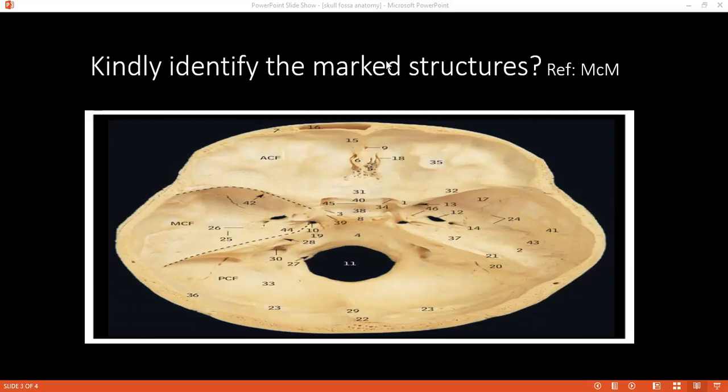Can you name two conditions which can give lytic skull lesions? Yes, ma'am. This can be secondary metastasis from the renal carcinomas or the thyroid carcinomas. It can be hemangiomas, multiple myeloma, sarcoidosis, Paget's disease, osteomyelitis.